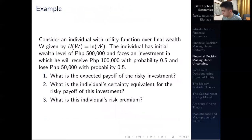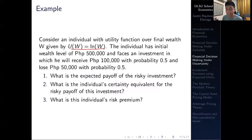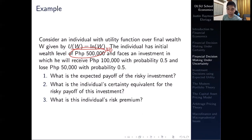Let's go with a mathematical example. Consider an individual with a utility function U(W) = ln(W). The individual has an initial wealth of 500,000 pesos and faces a gamble in which they will receive 100,000 pesos with probability 0.5 and lose 50,000 with probability 0.5. We are asked: first, what is the expected payoff? Second, what is the individual's certainty equivalent? Third, what is the individual's risk premium?